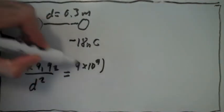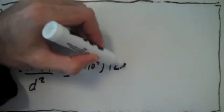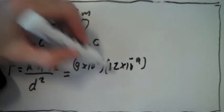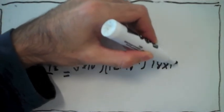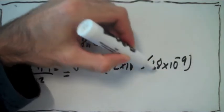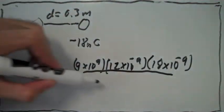have k is 9×10^9, the charge of the first sphere is 12×10^-9, the charge of the second one is 18×10^-9, and we divide by 0.3 squared.